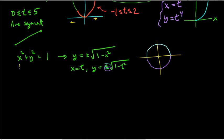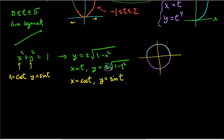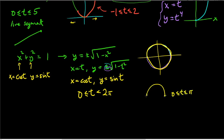Instead of theta, use t, so x = cos t and y = sin t. For the entire circle, t goes from 0 to 2π. If you only want the top half, specify t from 0 to π. By varying the range of t with the same parametrization, you get different portions of the circle.